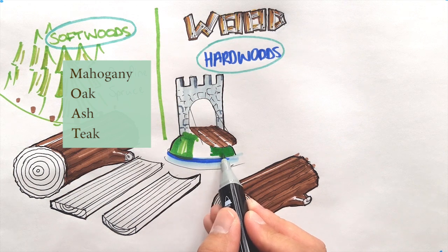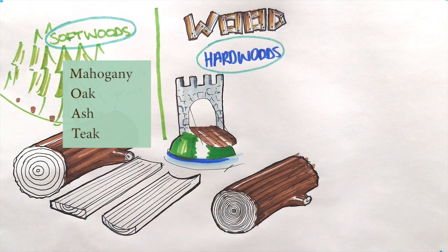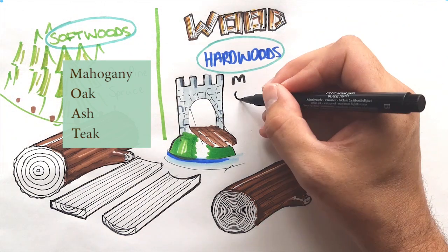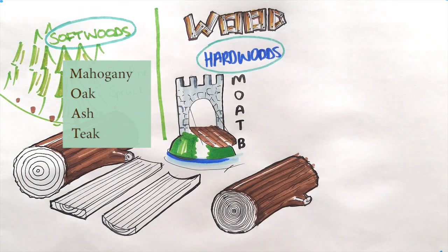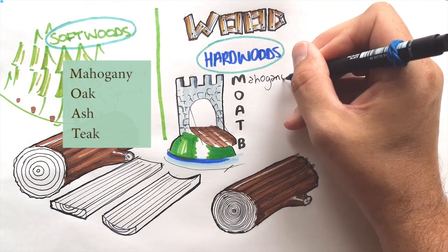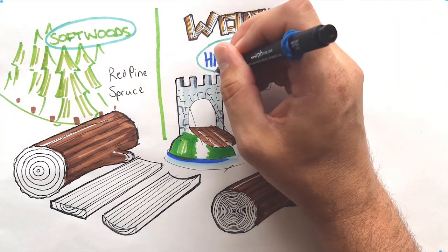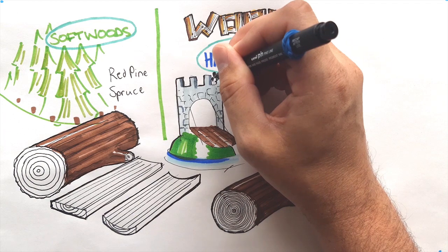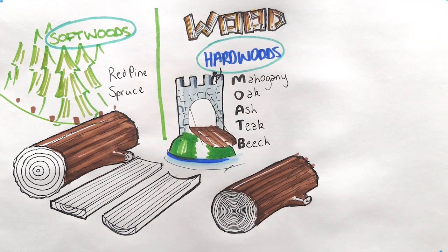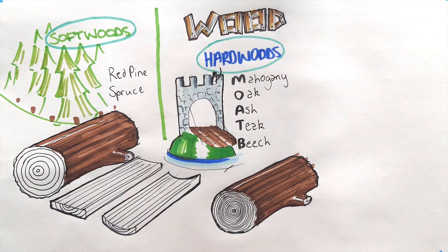There's another hardwood to remember, which is beech. We imagine ourselves building sandcastles at the beach and digging a moat around it. So those hardwoods are: mahogany, oak, ash, teak, and beech. Interestingly, one of them is considered to be particularly bendy and that's ash. We draw a little archer standing at the top of the castle and imagine that his bow is made out of ash. It's an extremely bendy hardwood.